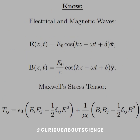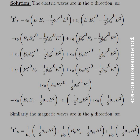We know that the electric and magnetic waves for a monochromatic wave are given, and Maxwell's stress tensor entry T_ij is equal to this. Notice that the delta_ij here is equal to the Dirac delta, which means that our indices need to match in order to be 1, and if they don't match, they're 0. We only have one direction for E and one direction for B, so a lot of these terms are going to cancel.